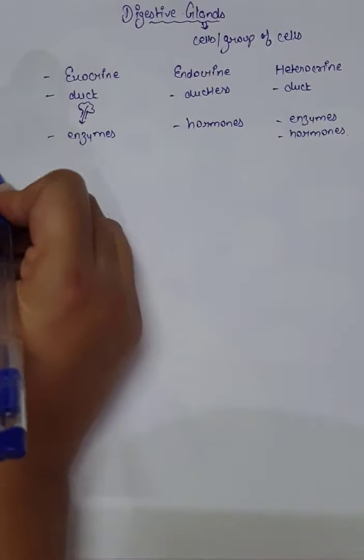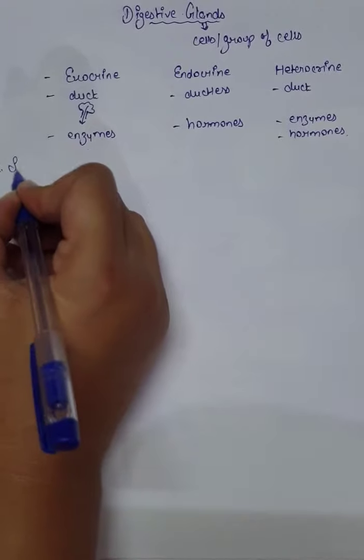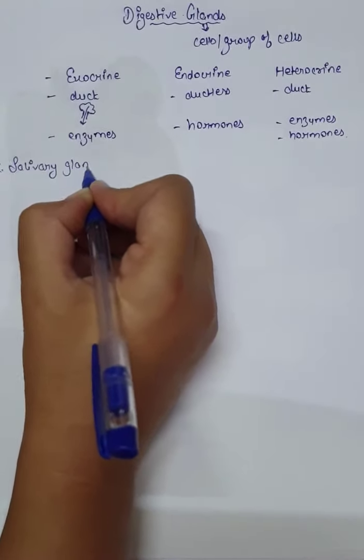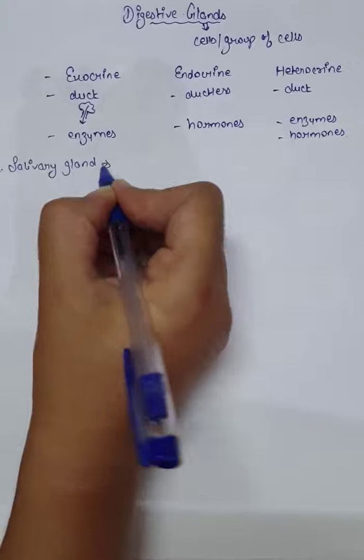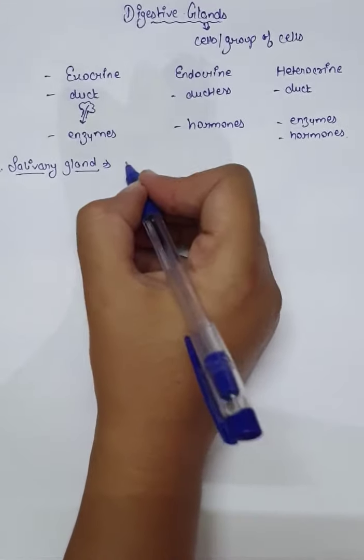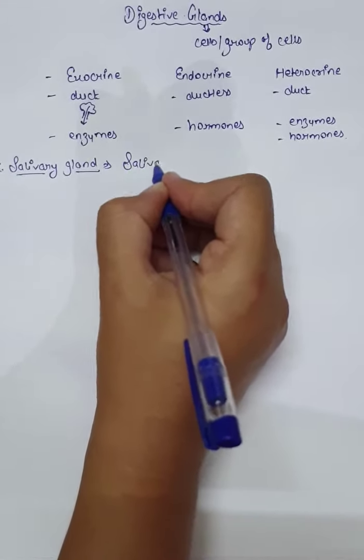In a sequential manner, I am going to discuss each and every gland of our digestive system. The first one is the Salivary gland. The glands responsible for the secretion of saliva are known as Salivary glands. We have three pairs of Salivary glands.